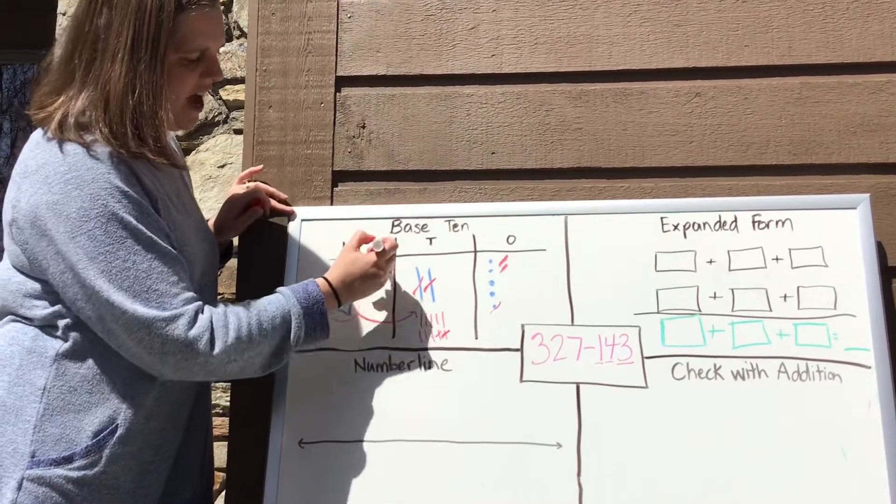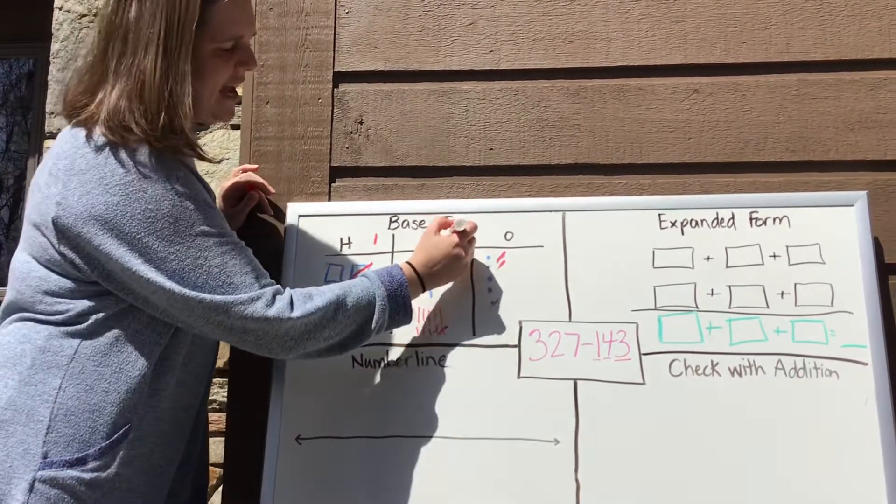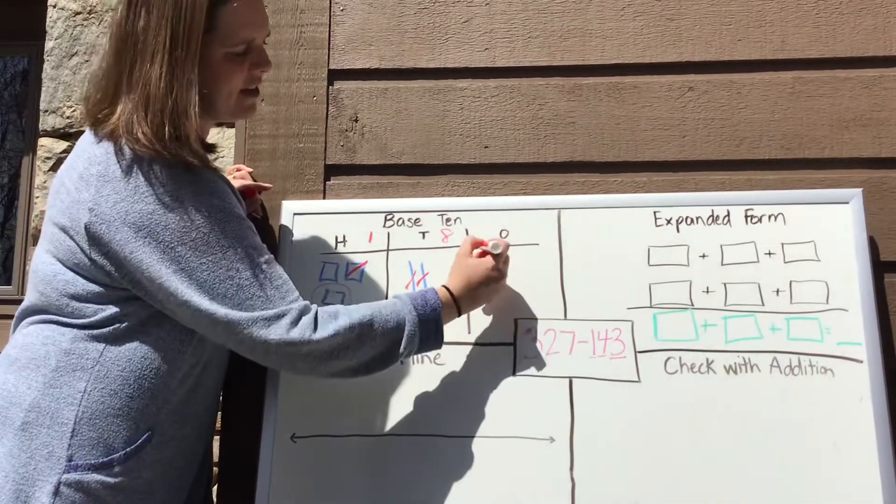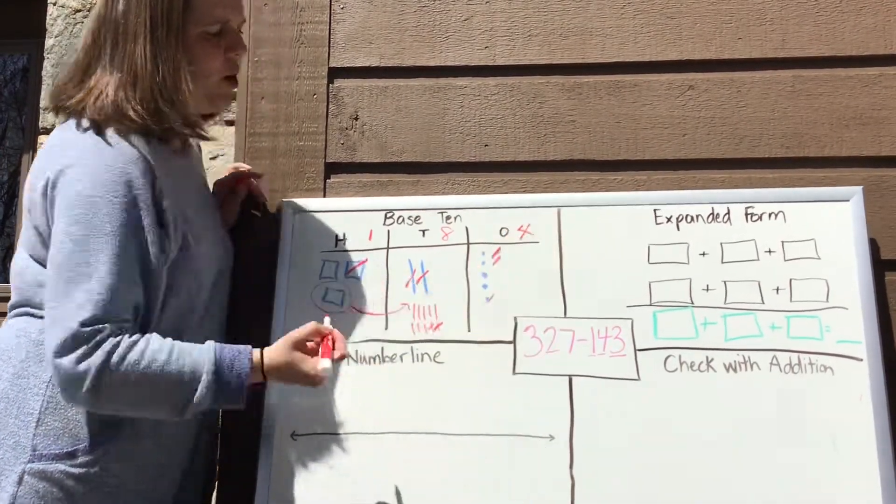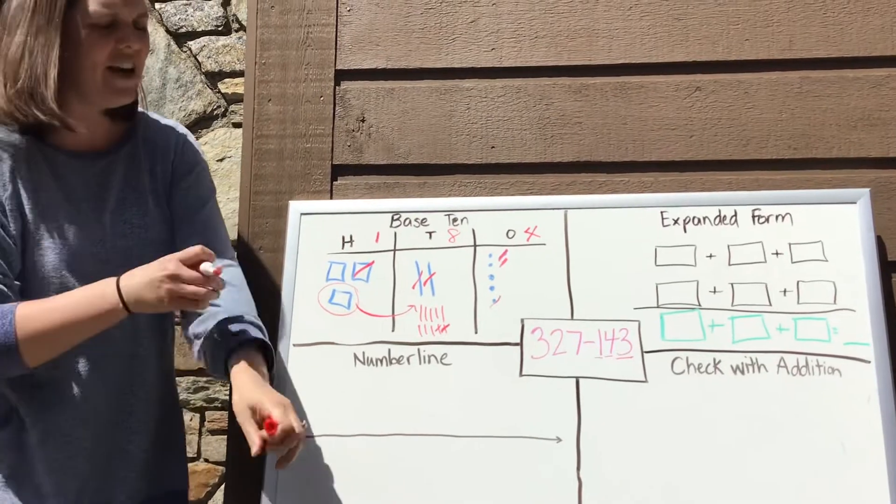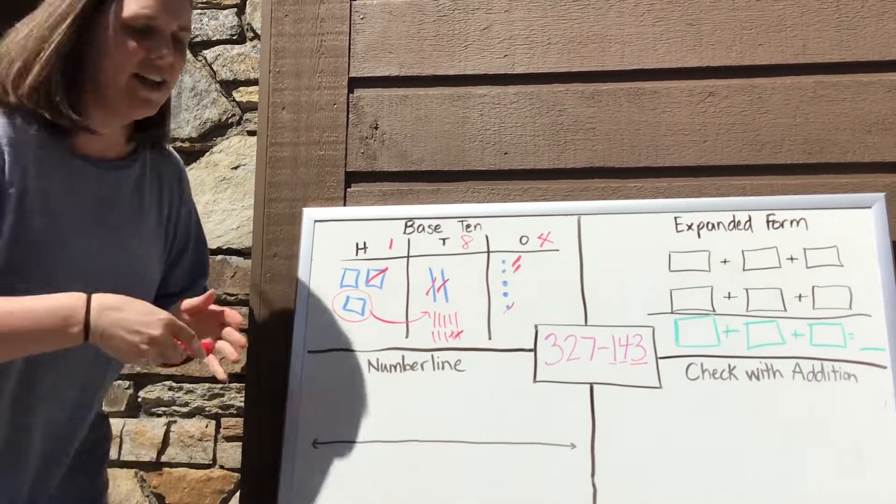So if I look back at it, I have one 100, eight tens, and four ones. So my answer is 184. All right, next strategy.